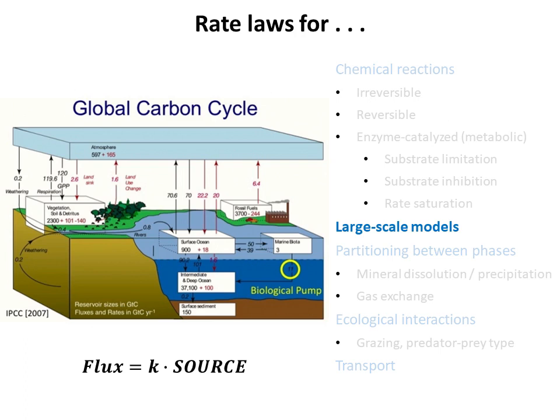In this video, we will look at rate laws that are typically used in large-scale models, such as the global carbon cycle model. We will see that the fluxes in large-scale models are described by first-order kinetics with respect to the size of the source, because they represent the effects of many different processes averaged over long timescales, which are assumed to be limited by the source.